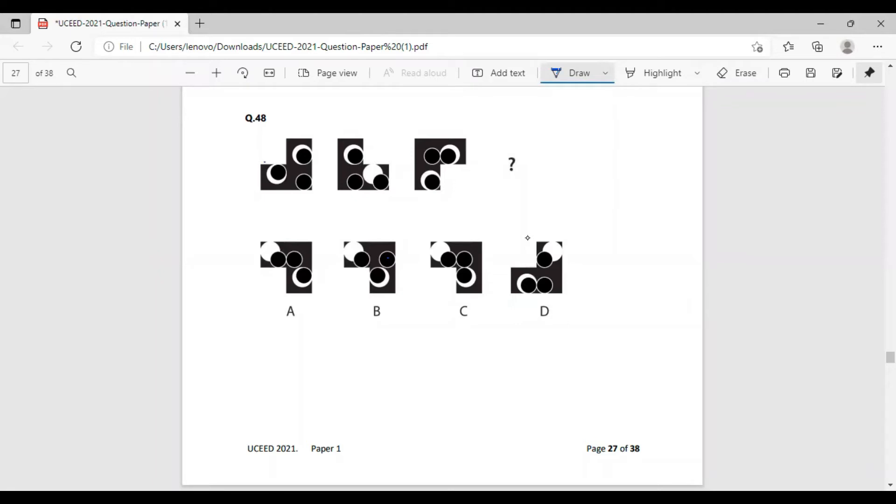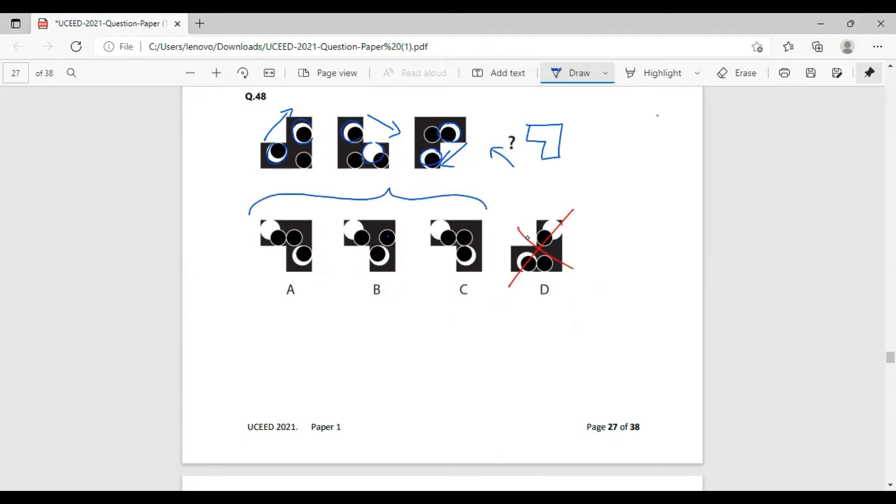And by that, I could conclude that the correct answer will be among the first three parts, that is A, B and C, and it cannot be part D. So, according to the arrangement of the white circles, I could conclude that part B is the correct answer for this question.